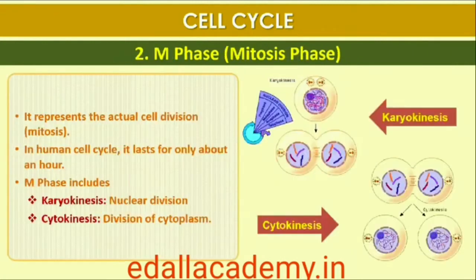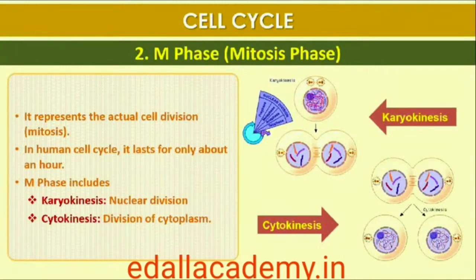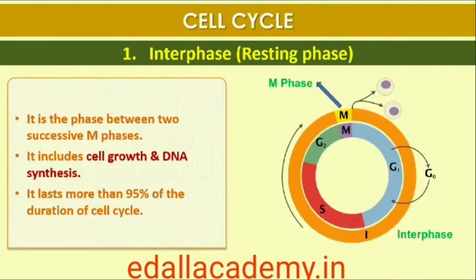The M-Phase starts with the nuclear division, corresponding to the separation of daughter chromosomes, and usually ends with division of cytoplasm. The interphase, though called the resting phase, is the time during which the cell is preparing for division by undergoing both cell growth and DNA replication in an orderly manner.